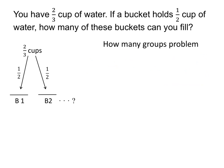Now let's look at the next example: you have two-thirds of a cup of water; if a bucket holds half a cup of water, how many buckets can you fill? This is identical to the previous problem except with different numbers — instead of six cups and two cups, we have two-thirds and one-half. Our picture looks nearly identical; we just have fractions instead of whole numbers. We put two-thirds of a cup on top and fill buckets with one-half of a cup each. This is a how-many-groups problem, so we take two-thirds divided by one-half. The question is: what does that arithmetic actually equal?